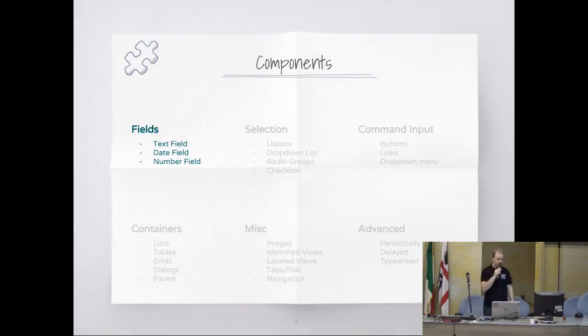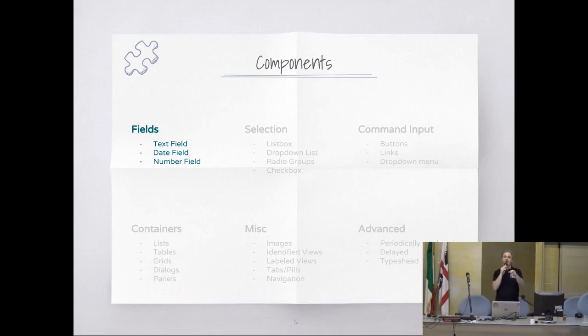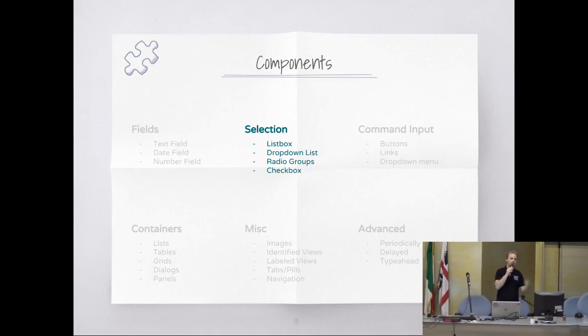This is a brief list of the more important components provided out of the box. You have fields for text, date, and number. For example, the date field in Bootstrap will open a dialog so you can choose the date — you don't have to type it manually. There are also selection components like list box, dropdown list, radios, and checkbox.